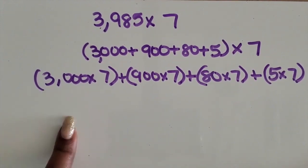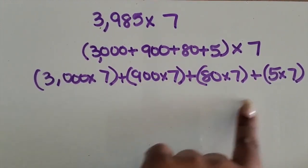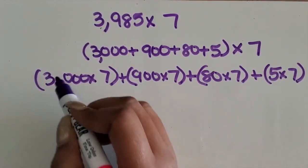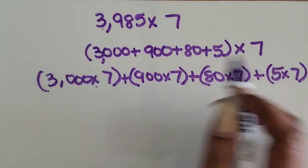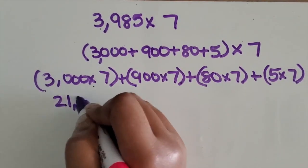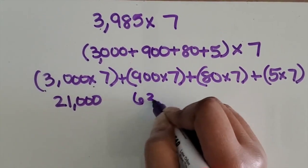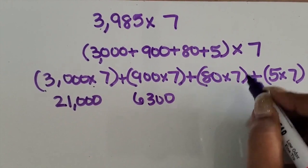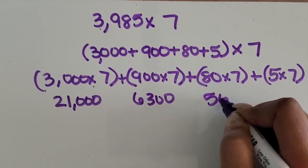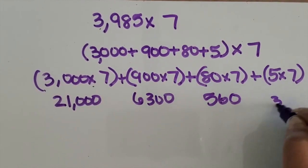Now we're going to find the product for each of those expressions. 3,000 times 7 is 21,000. 900 times 7 is 6,300. 80 times 7 is 560. 5 times 7 is 35.